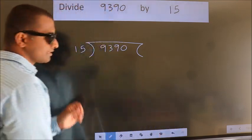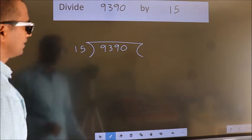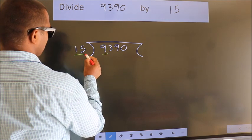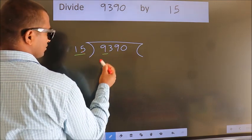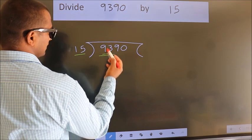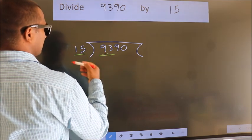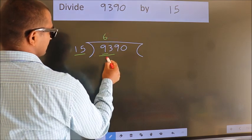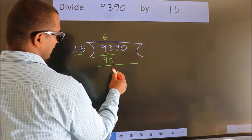This is your step 1. Next, here we have 9, here 15. 9 is smaller than 15, so we should take two numbers: 93. A number close to 93 in the 15 table is 15 times 6 equals 90. Now we should subtract.